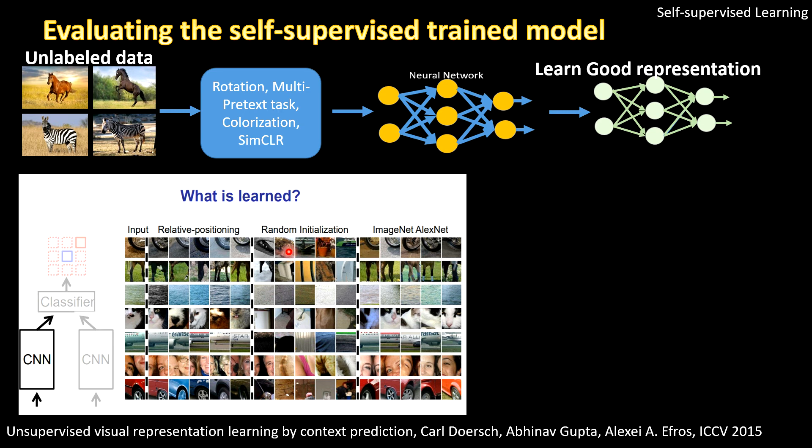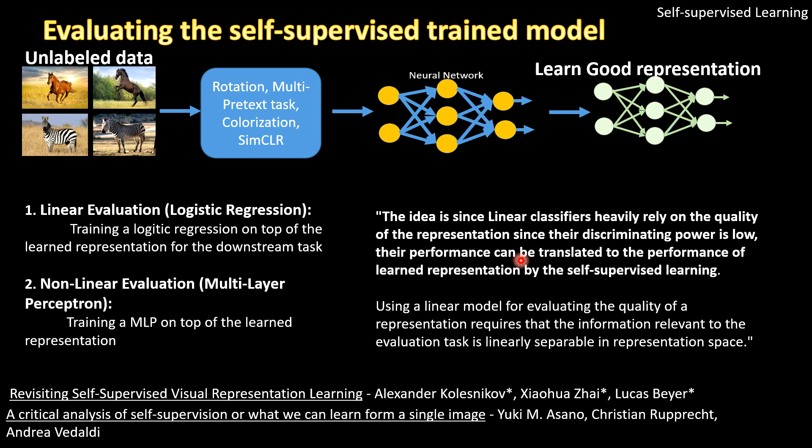And another most popular is the linear evaluation, where you have this learned representation network and you simply get your representation, add a logistic regression, and do the classification. And the idea is that if your linear classifier is performing well, then your learned representations are good.